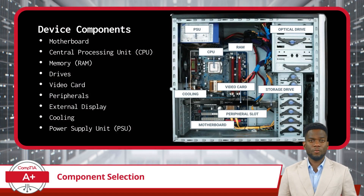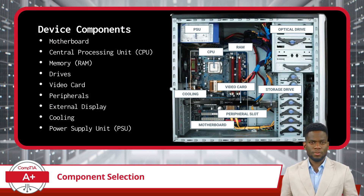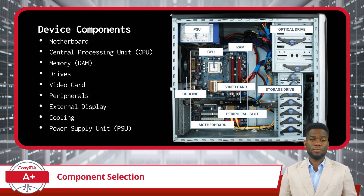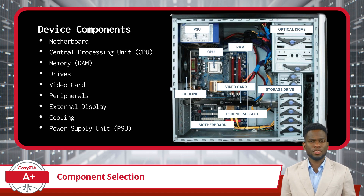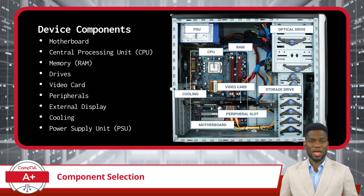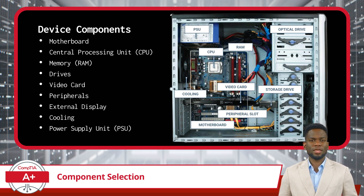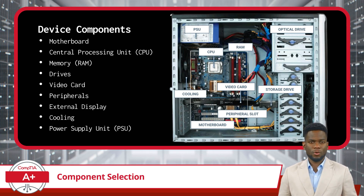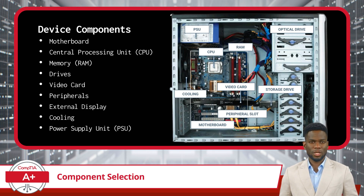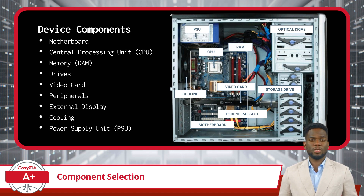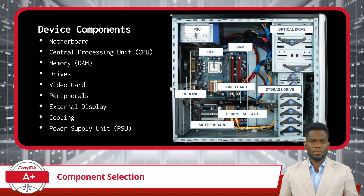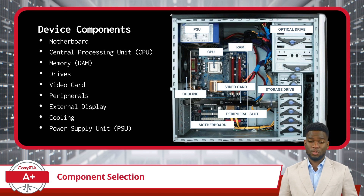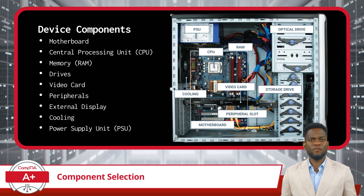When assembling a PC tailored to specific requirements, several key components must be carefully considered. The motherboard serves as the foundation of the system, dictating compatibility and providing connectivity for other components. The CPU, or Central Processing Unit, determines the system's processing power and efficiency, influencing overall performance in various tasks. Adequate RAM is essential for multitasking and system responsiveness, with the amount and speed of RAM impacting overall performance. Storage drives, including solid-state drives for fast data access and hard disk drives for large storage capacities, alongside optical drives such as CD, DVD, and Blu-ray drives, affect system boot times, application loading speeds, and enable access to physical media. The video card plays a crucial role in rendering graphics for gaming, multimedia tasks, and design applications, influencing visual quality and performance.